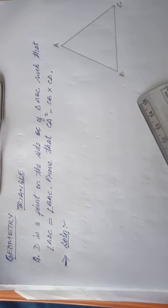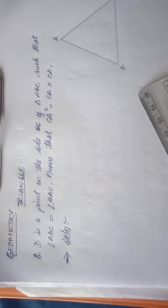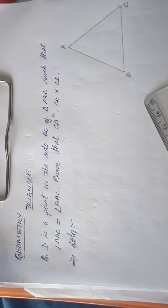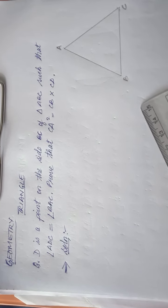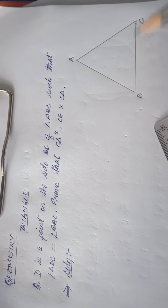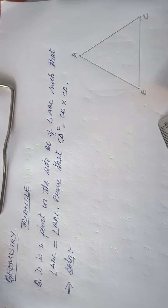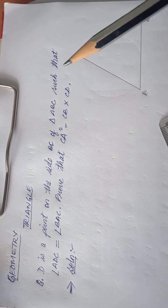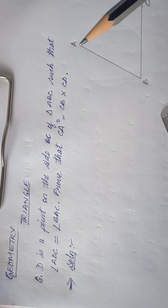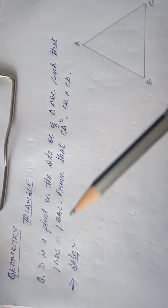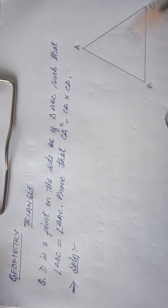Today we will be talking about geometry from the triangle topic. As we can see from the question, D is a point on the side BC of triangle ABC. This is a general triangle — not equilateral, scalene, or isosceles — simply triangle ABC. D is placed on side BC here.